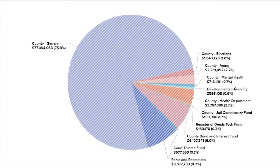Before we get started, it is important to note that this video will include all county funds shown in this pie chart here. Those funds are the County General Fund, Elections, Aging, Mental Health, Developmental Disability, the Health Department, Jail Commissary, Register of Deeds Technology Fund, the very small funds of Clerk's Technology Fund and Treasurer's Technology Fund, County Bond and Interest, the Court Trustee Fund, and finally Parks and Recreation.